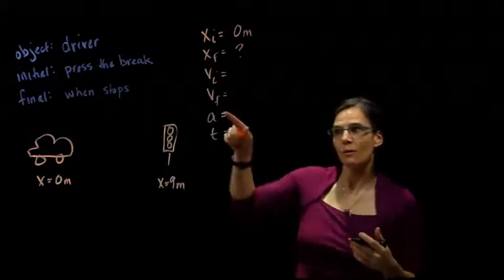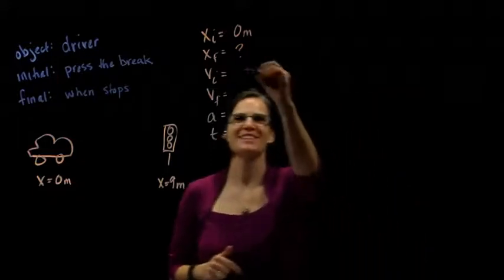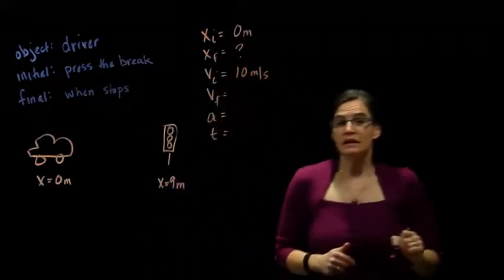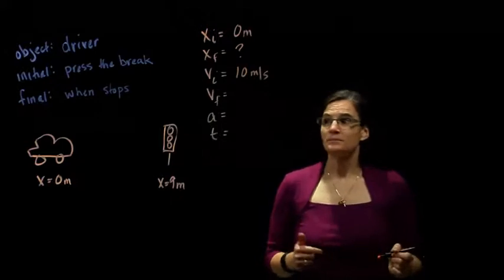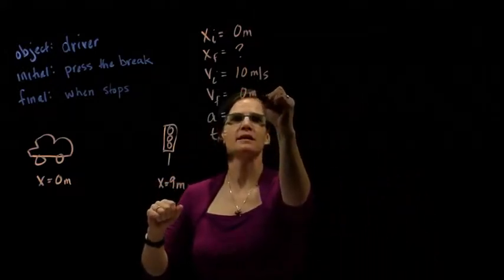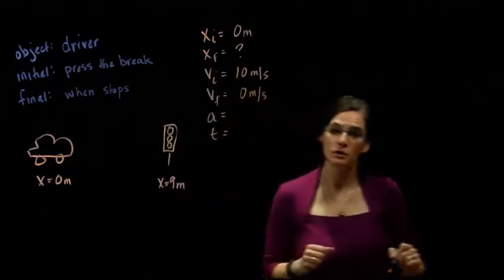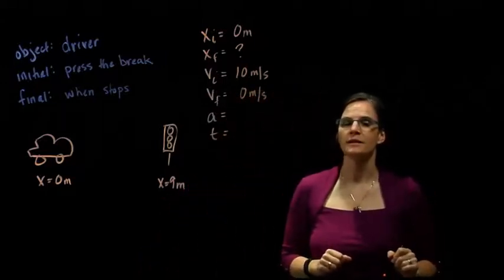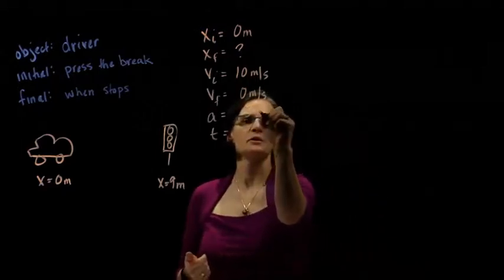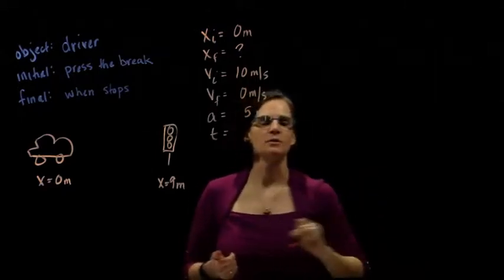Initial velocity, how fast is the object going? When he presses the brake and the problem tells us it's at 10 meters per second. Final velocity is when he stops at the end of our motion. Well, stopping means he hit 0 meters per second. So, we do know the final velocity.